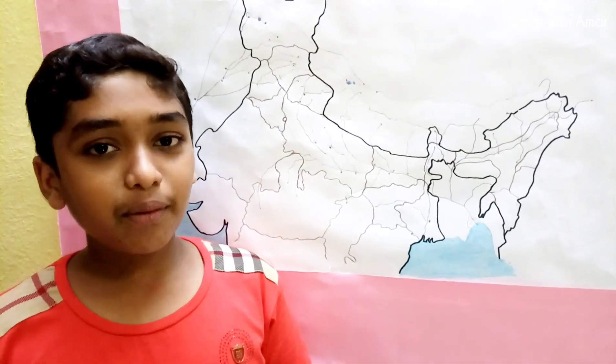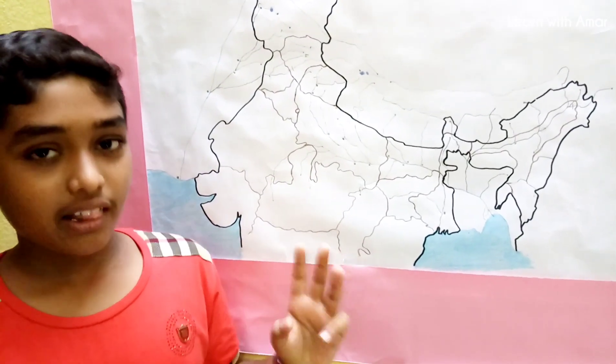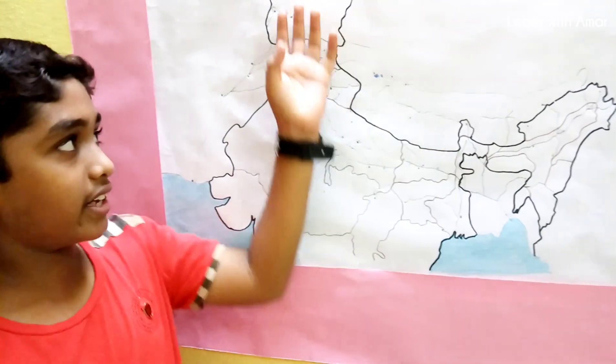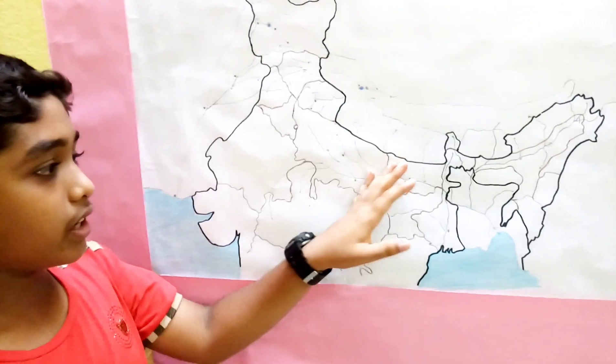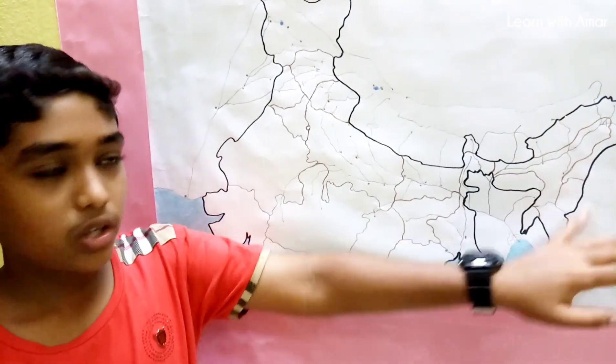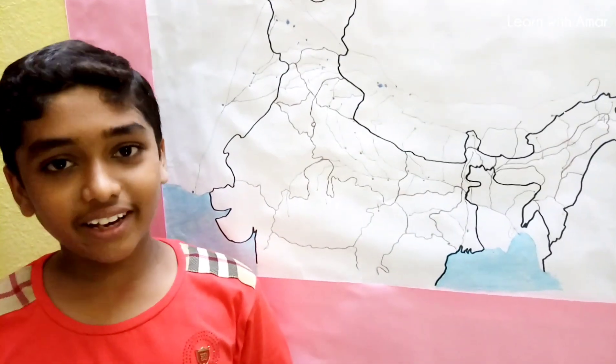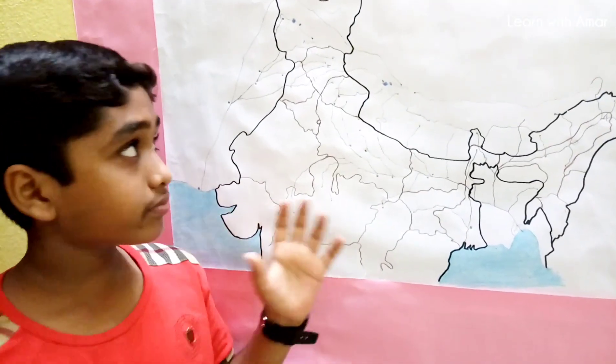There are mainly three Himalayan rivers: the Indus, Ganga, and the Brahmaputra. First we will learn about the Indus.